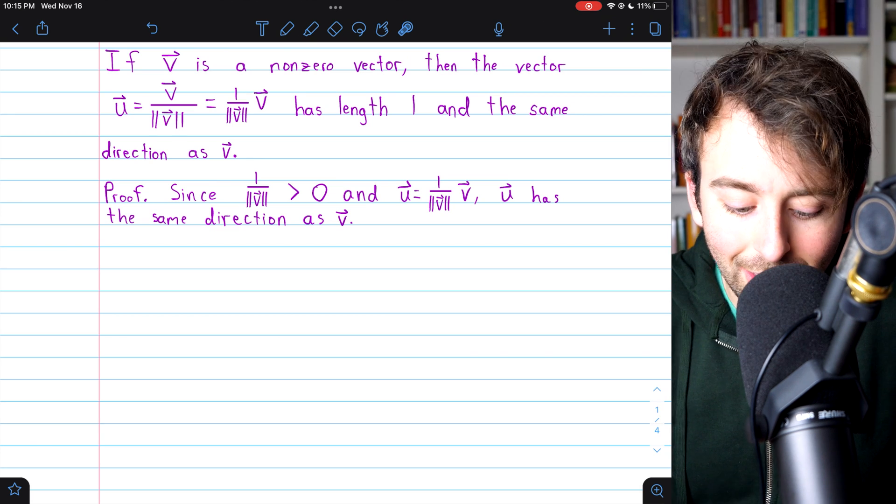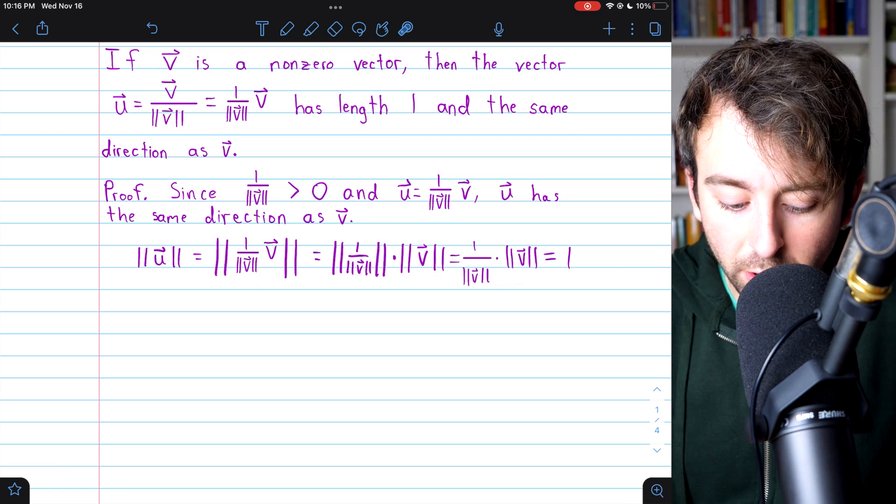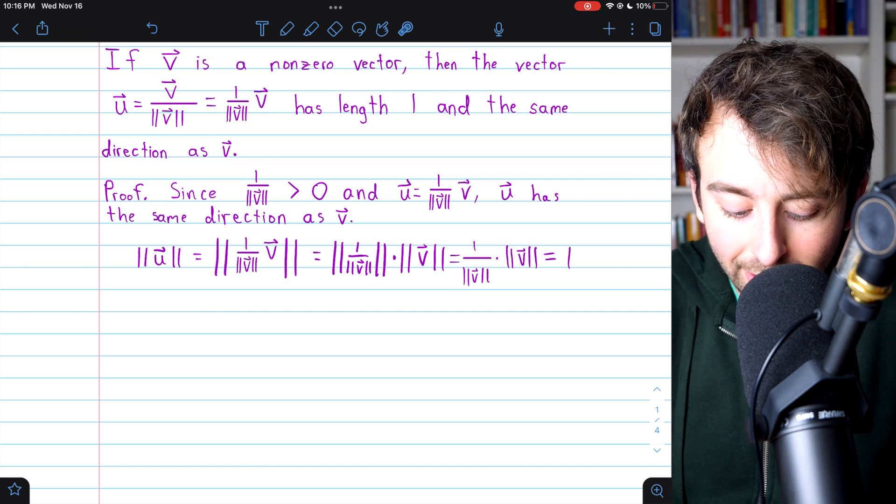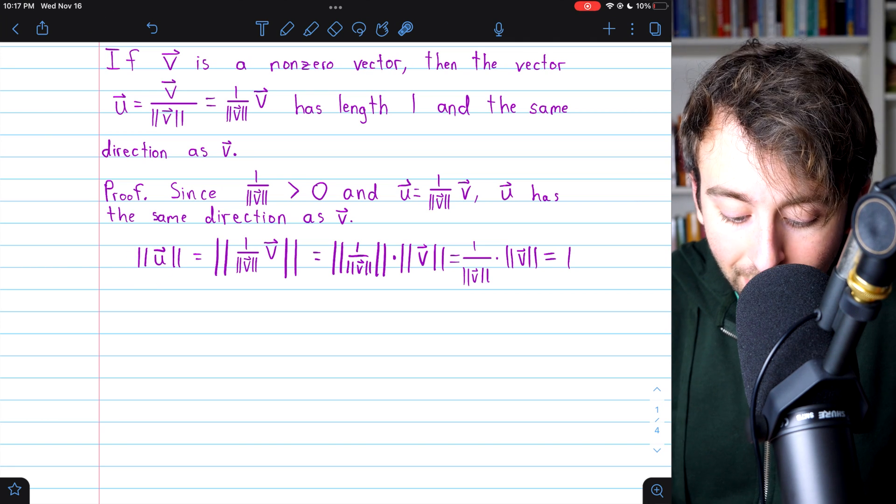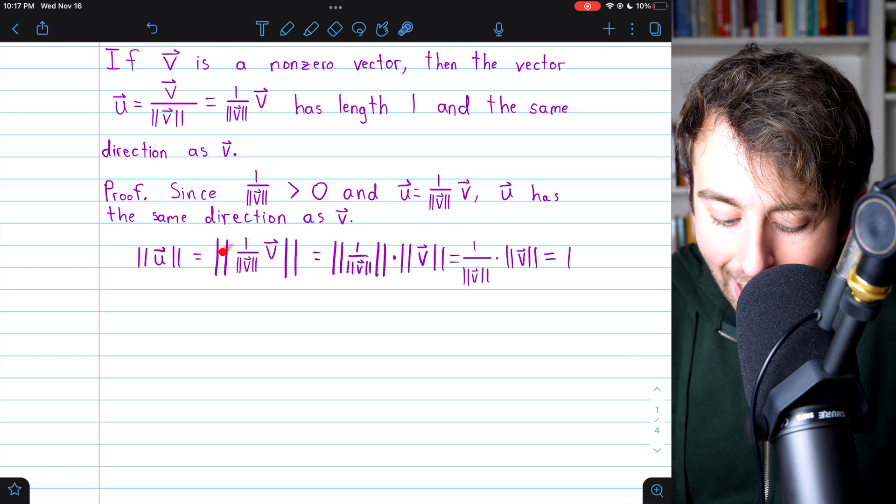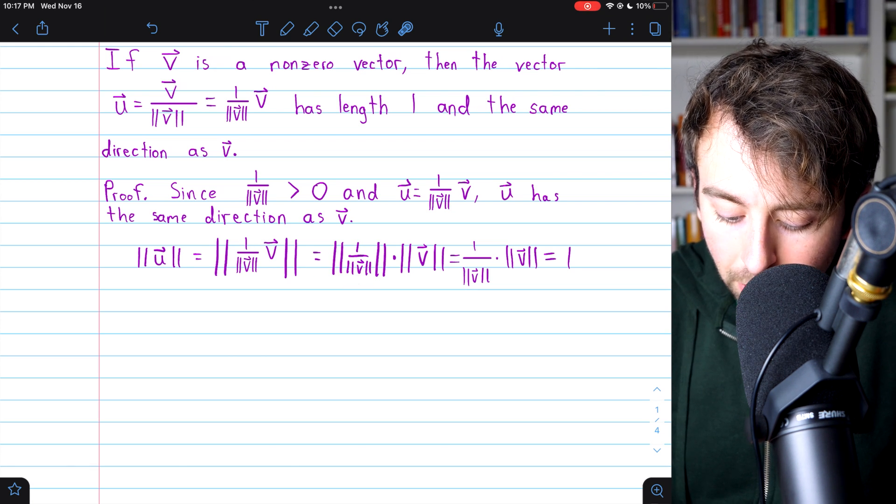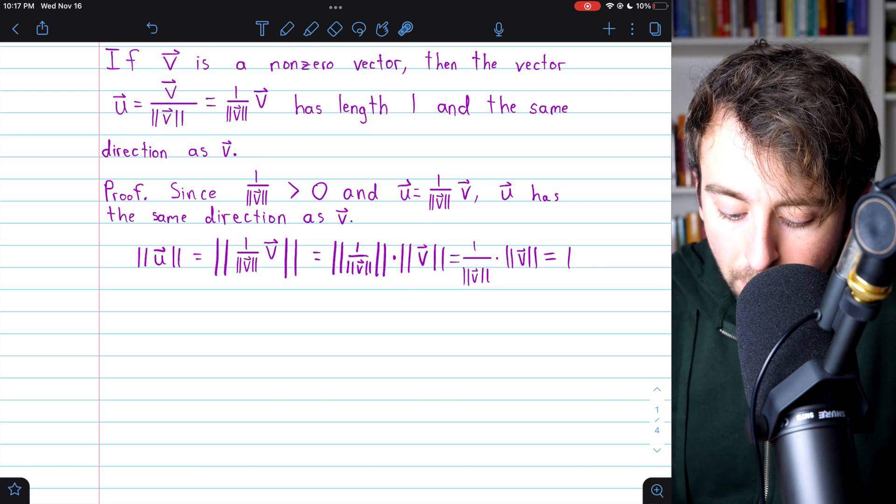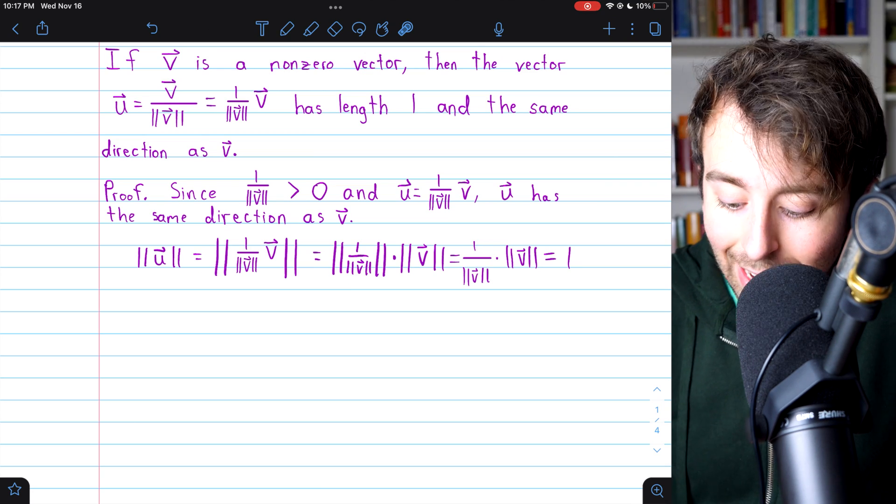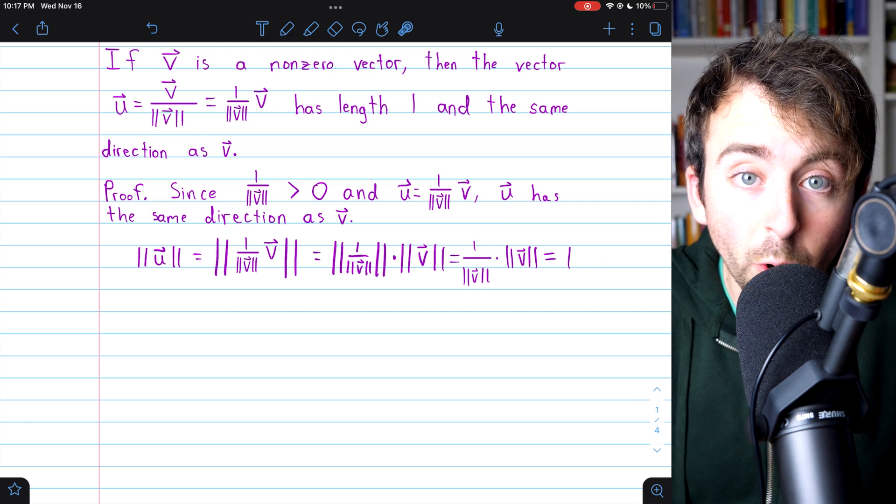All that remains is to demonstrate that the length of u is 1. And that is established in this simple string of equations. We said that u is the vector v multiplied by 1 over v's magnitude. So, then the magnitude of u is the magnitude of v multiplied by 1 over v's magnitude. Now, this magnitude of a scalar times a vector is the same as the magnitude of the scalar times the magnitude of the vector. But the magnitude of the scalar, 1 over v's magnitude, is just 1 over v's magnitude. And so, this becomes 1 over v's magnitude times v's magnitude, which is, of course, just 1.